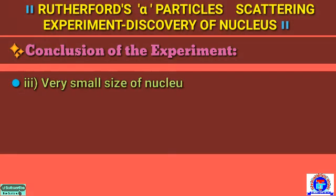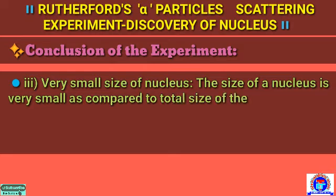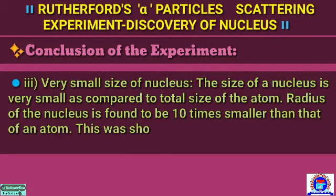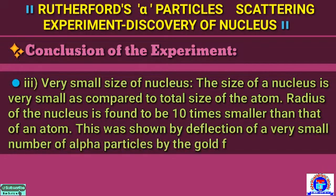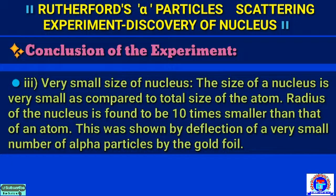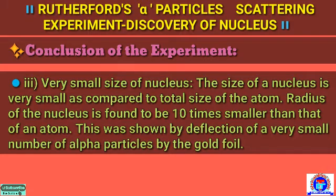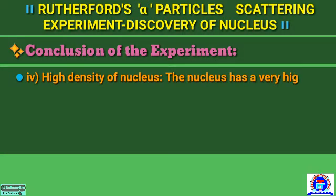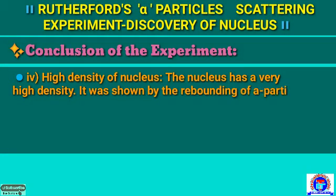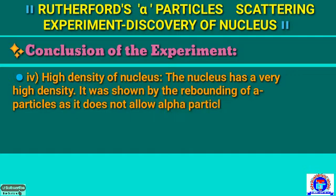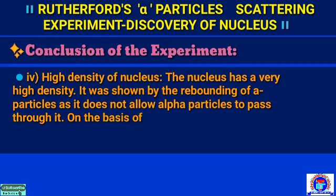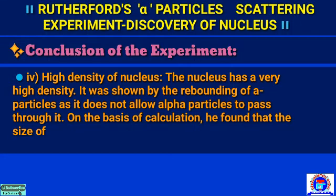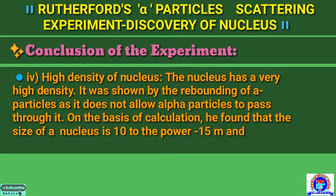Conclusion number 3: very small size of nucleus. The size of a nucleus is very small as compared to the total size of the atom. The radius of the nucleus is found to be 10 to the power 5 times smaller than that of an atom. This was shown by the deflection of a very small number of alpha particles by the gold foil. Conclusion number 4: high density of nucleus. The nucleus has very high density, as shown by the rebounding of alpha particles — it does not allow alpha particles to pass through it.